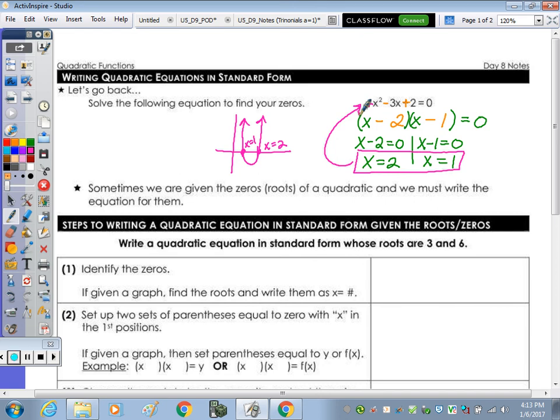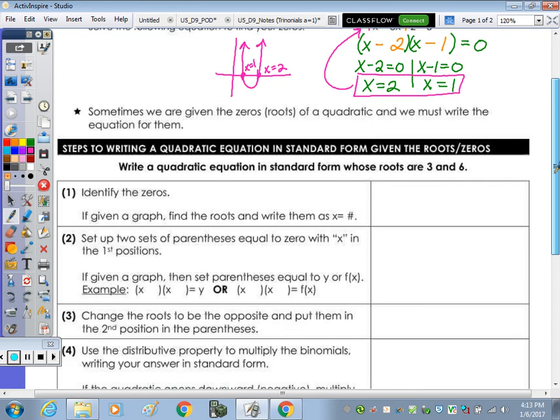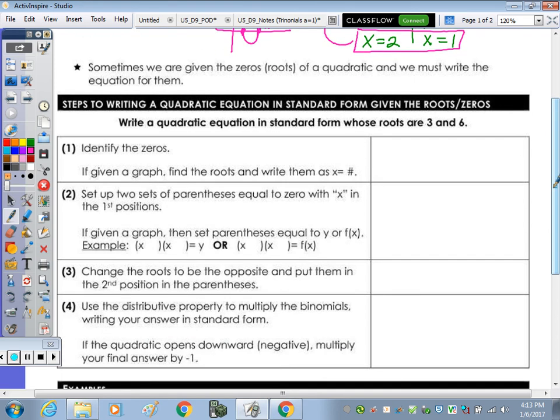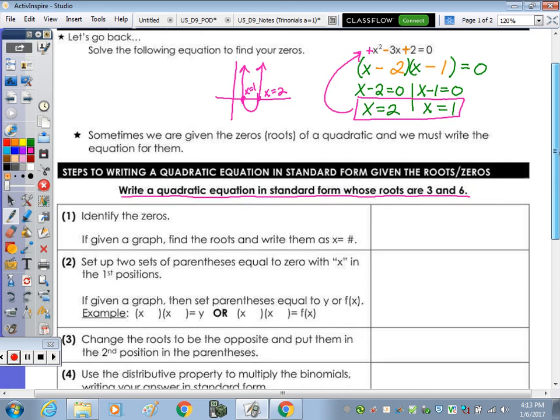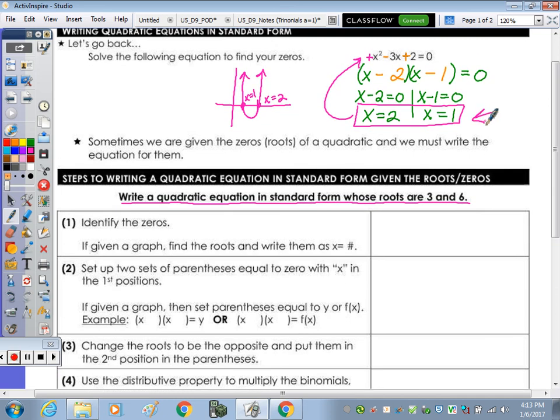So sometimes we are given the zeros or roots of a quadratic equation, and we must write the equations for them. And here are the steps to do that. The directions say write a quadratic equation in standard form whose roots are 3 and 6. Well, the first thing we do is we write them in terms of x. So it's going to be x equals 3 and x equals 6.